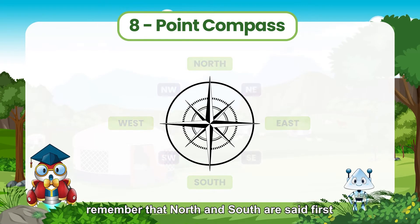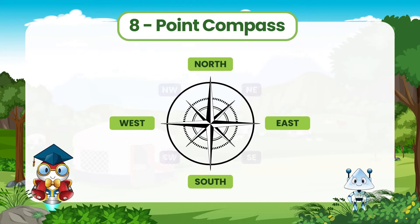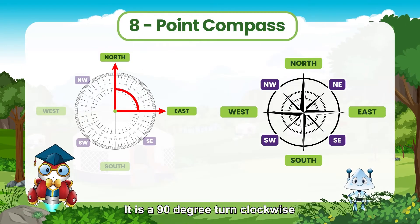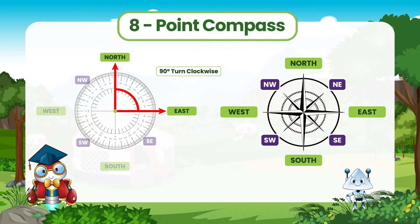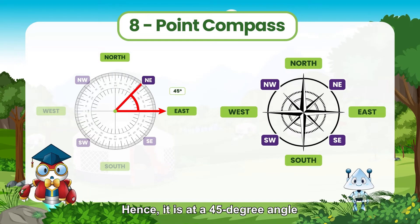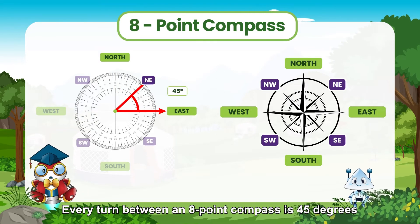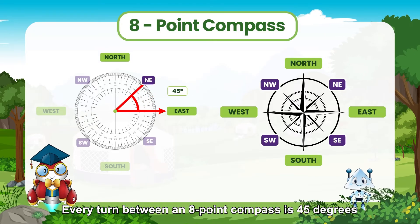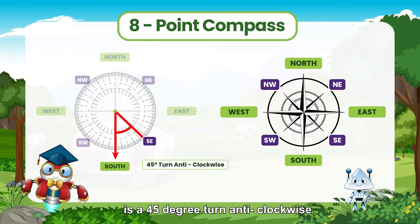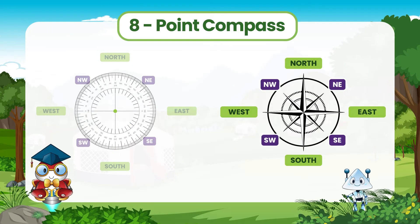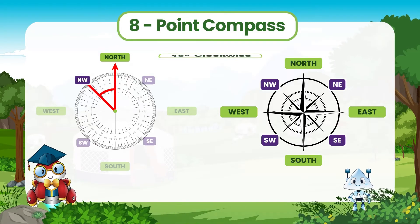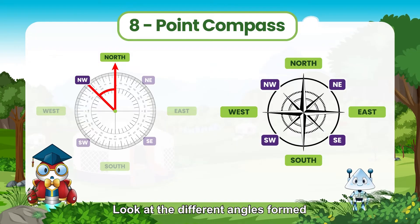While naming the directions, remember that north and south are said first. A turn from north to east is a quarter turn — it is a 90-degree turn clockwise. Northeast is right in the middle of north and east, hence it is at a 45-degree angle. Every turn between an eight-point compass is 45 degrees. A turn from south to southeast is a 45-degree turn anticlockwise. A turn from northwest to north is 45 degrees clockwise. Look at the different angles formed in an eight-point compass.